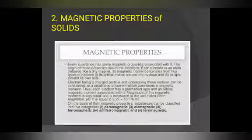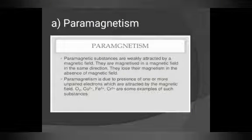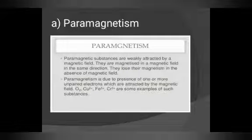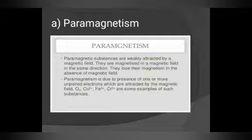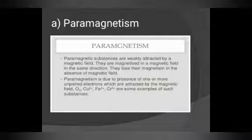On the basis of magnetic property, substances are classified into five categories. First is paramagnetism — paramagnetic substances are weakly attracted by a magnetic field. They are magnetized in the same direction as the magnetic field and lose their magnetism in the absence of a magnetic field. This is due to the presence of one or more unpaired electrons. Examples include oxygen, Cu²⁺, Fe³⁺, and Cr³⁺.